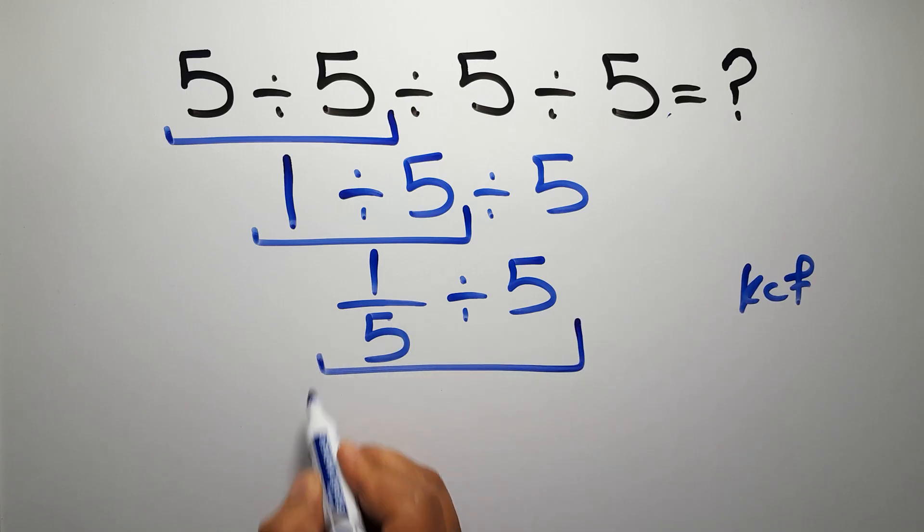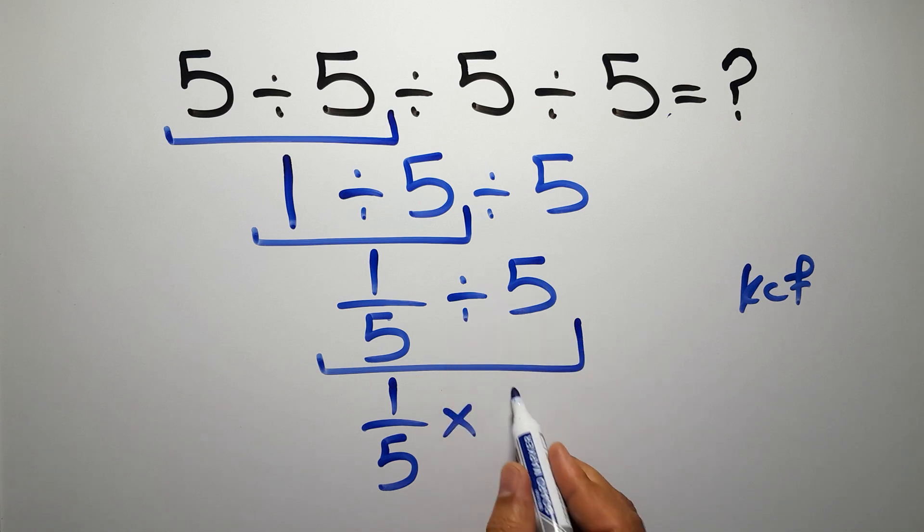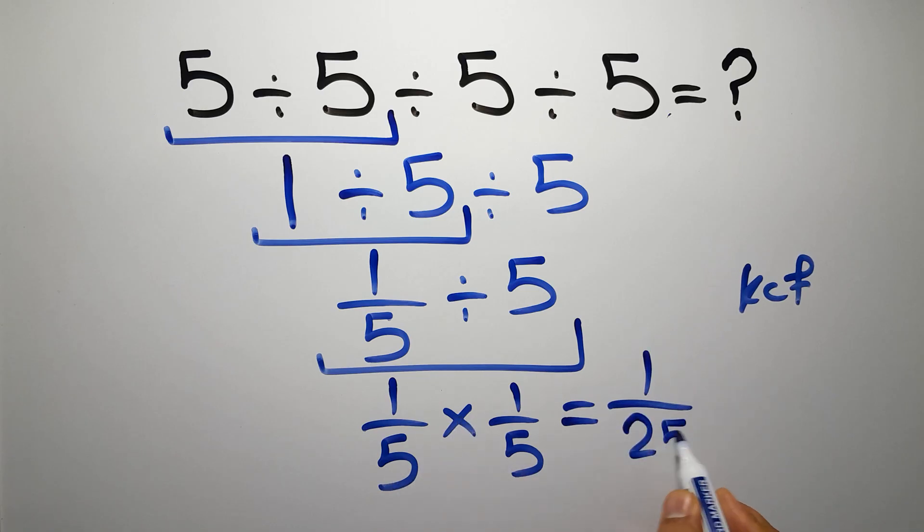We can write: keep the first fraction, change division to multiplication, and flip the second fraction. So we have 1 over 5 times 1 over 5, which equals 1 over 25.